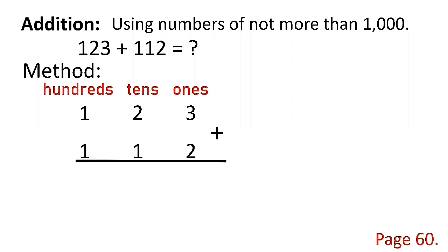So we will try to add: 3 plus 2 is 5. And 2 plus 1 is equal to 3. And 1 plus 1 is equal to 2. Remember, you have to start adding numbers in ones place, then tens place, then hundreds place. So if you are going to add 123 plus 112, the answer is 235.